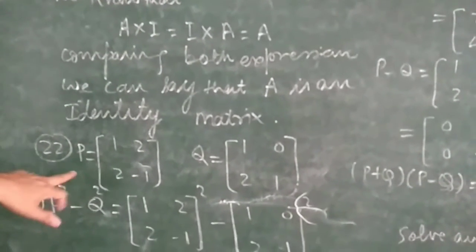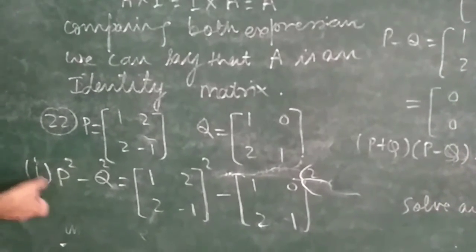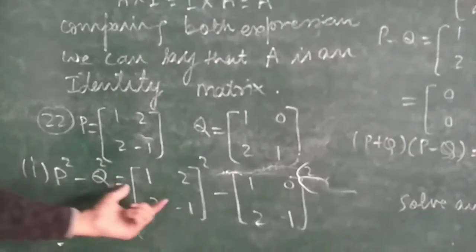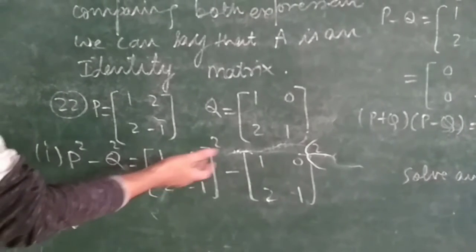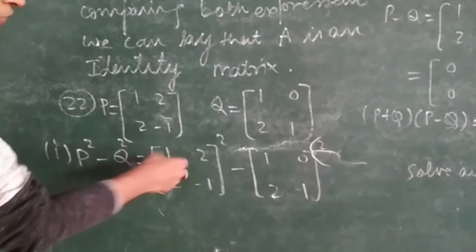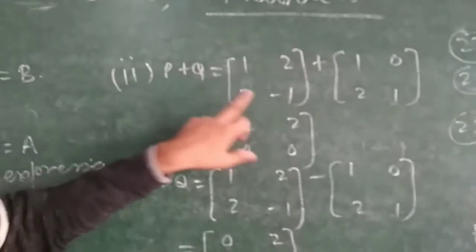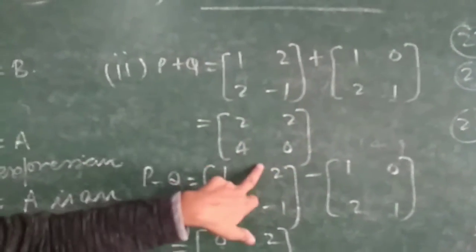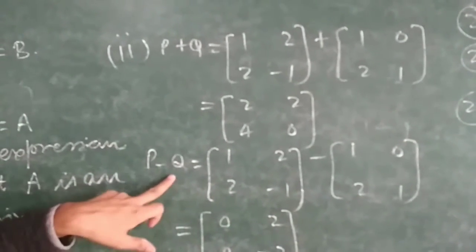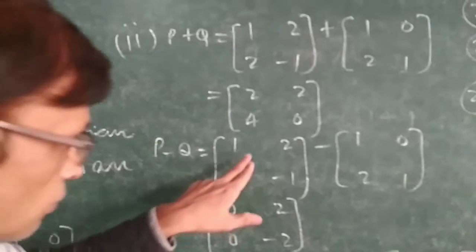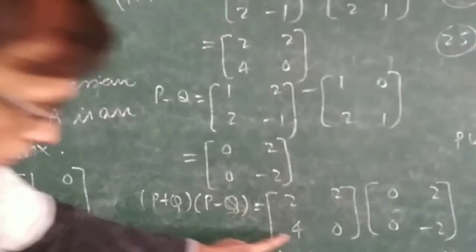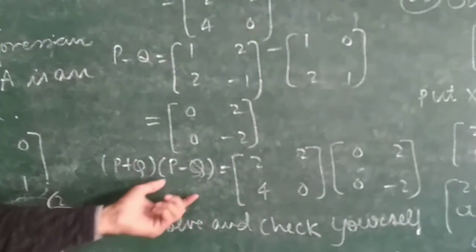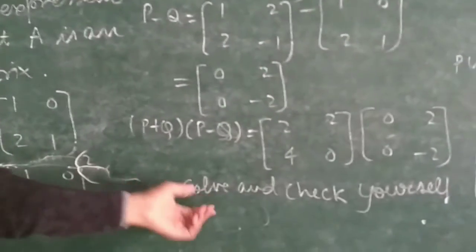Now question 22 — P and Q are given matrices. First part: we have to find the value of P squared and Q squared by multiplying the same matrix with itself. Then second part: find P plus Q by adding both matrices, and P minus Q by subtracting them. Then multiply (P+Q) and (P-Q) and check whether this answer matches P² minus Q². You have to verify and check yourself.